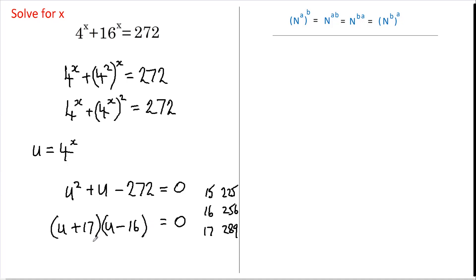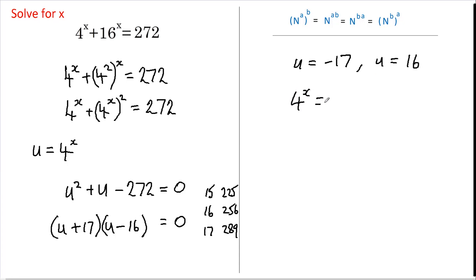We need a positive 1, so let's have positive 17 and negative 16. That gives us negative 272 — 170 and 102, so yes, that's 272. That's right. So u must equal either negative 17 or u equals 16. Changing u back to 4 to the power of x: 4 to the x equals minus 17, or 4 to the x equals 16.